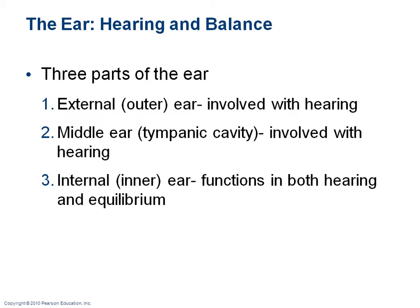Before we start, we'll talk about the three parts of the ear — external, middle, and internal. The external is the outer part of the ear, and the internal is the inside. What's interesting is the external ear all the way through to the internal ear is involved in hearing, but just the internal ear is involved with equilibrium.